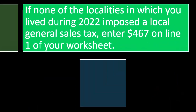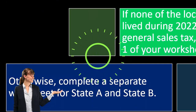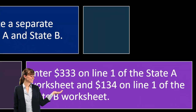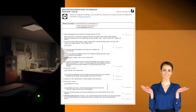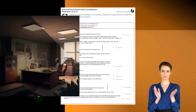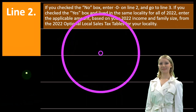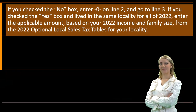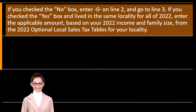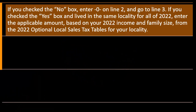If none of the localities you lived in imposed a local general sales tax, enter $467 on line one of your worksheet. Otherwise, complete a separate worksheet for State A and State B — enter $333 on line one of the State A worksheet and $134 on line one of the State B worksheet. Good software can help you deal with these situations. On line two of the worksheet, if you checked the no box, enter zero and go to line three. If you checked yes and lived in the same locality all of 2022, enter the applicable amount based on your 2022 income and family size from the optional local sales tax table for your locality.